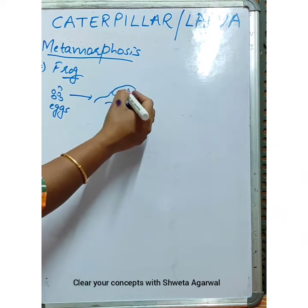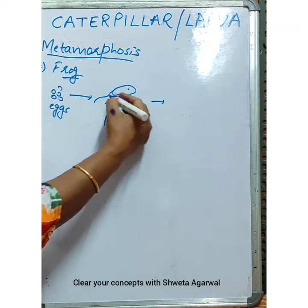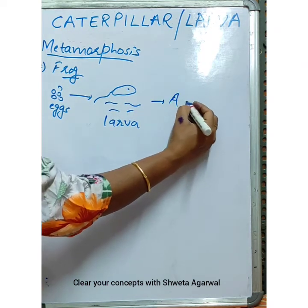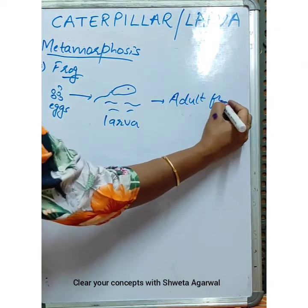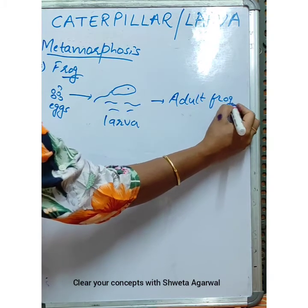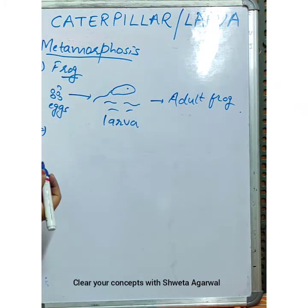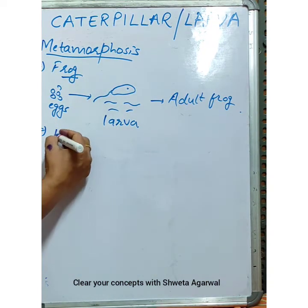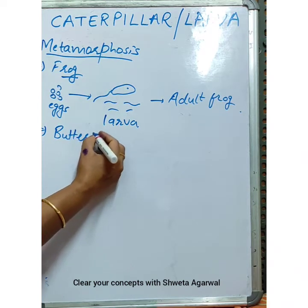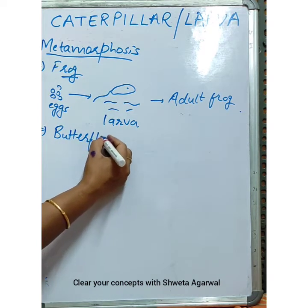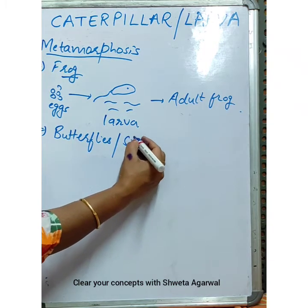This larva later on undergoes many changes and becomes an adult frog. Similarly, you also study the life cycle of butterflies and many other insects like the silkworm.